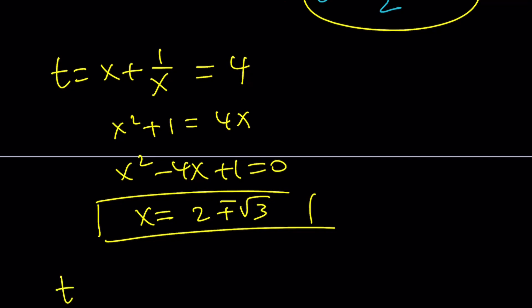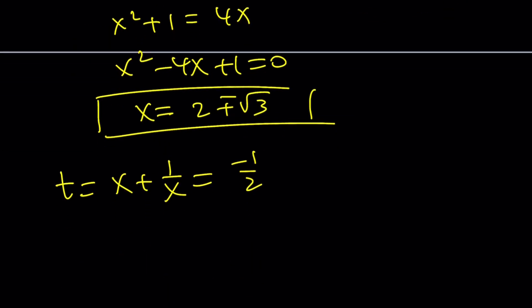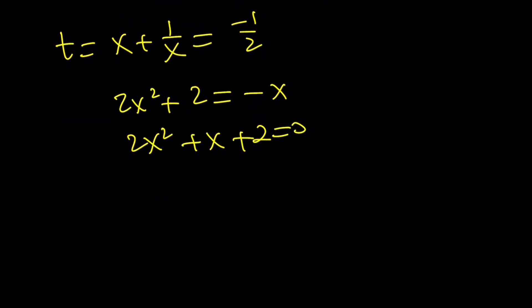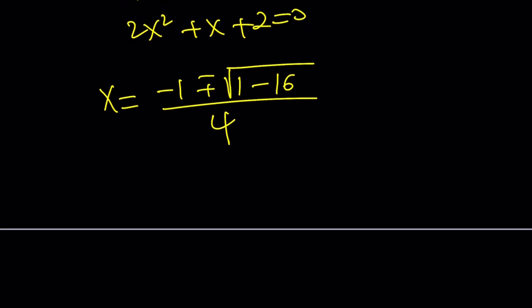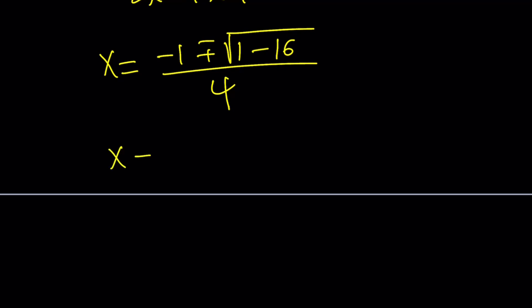And then the other t value is going to give us negative 1 half. Again, if you multiply everything by, instead of multiplying by x, you can multiply by 2x. So that's going to give you 2x squared plus 2 equals negative 1. And then 2x squared, that should be an x somewhere, negative x. Because we multiply by 2x, negative x. And then that's going to give us 2x squared plus x plus 2 is equal to 0. Now how do you solve this equation? By using the quadratic formula again. Let's go ahead and solve it. Negative b plus minus the square root of b squared, 1 minus 4 times 2, 8 times 2, 16. That's not good. This is going to give us complex solutions because the discriminant is negative. 1 minus 16 is negative. So we're going to write it as square root of 15i divided by 4.